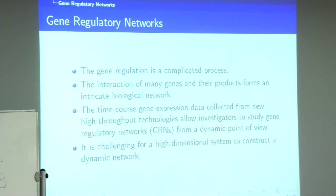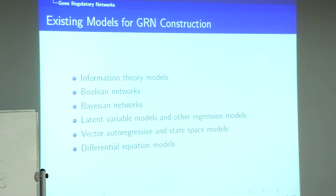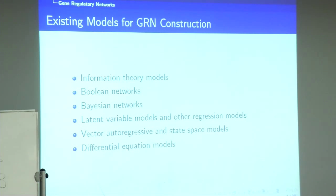In the literature there are many methods in this field. We can use information theory models, but that is not a specific model. A lot of research uses Boolean networks, which include only two states — on or off — so it's a discrete, not continuous model. Another approach uses Bayesian networks, but the computation cost is very high and it is very difficult to apply to high-dimensional data analysis. It also requires prior distributions. So we don't use Bayesian networks in our work.